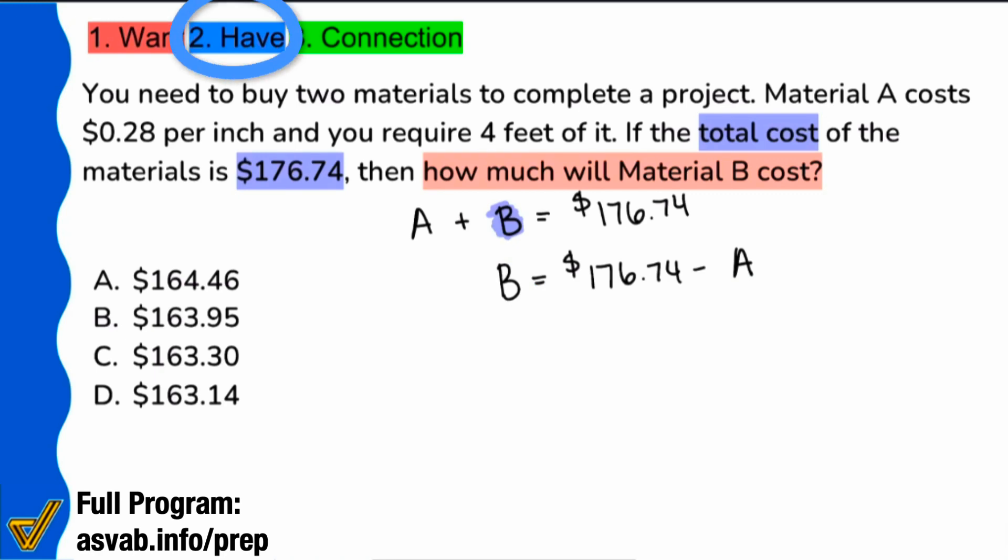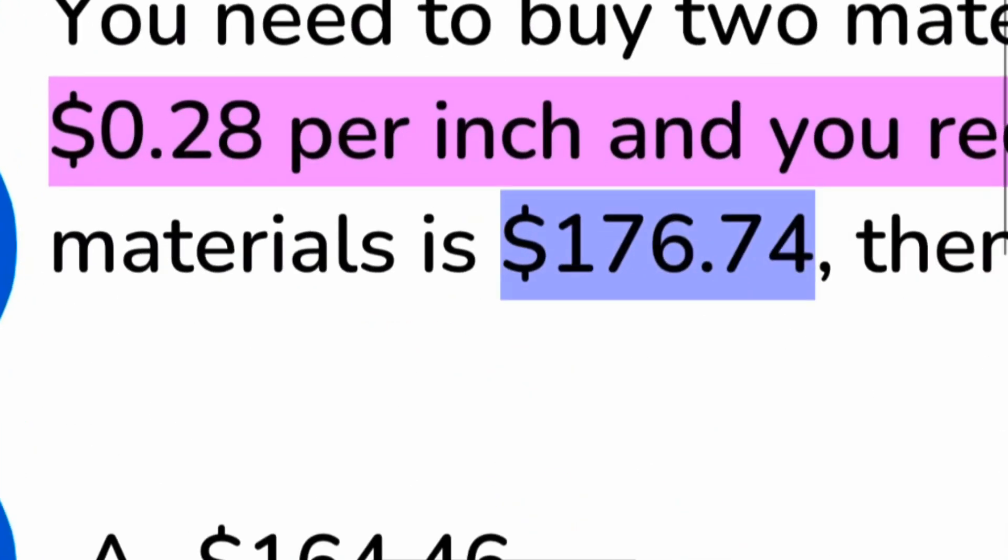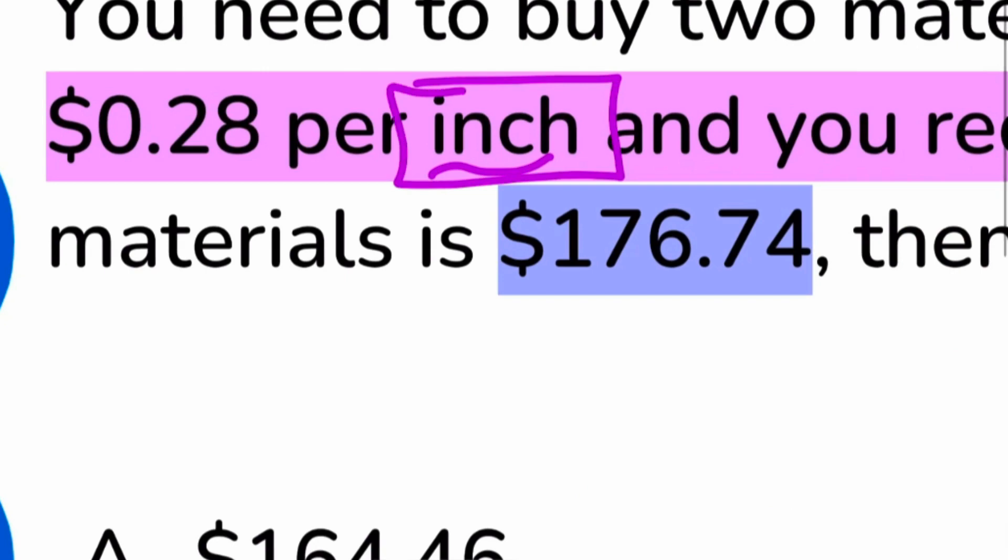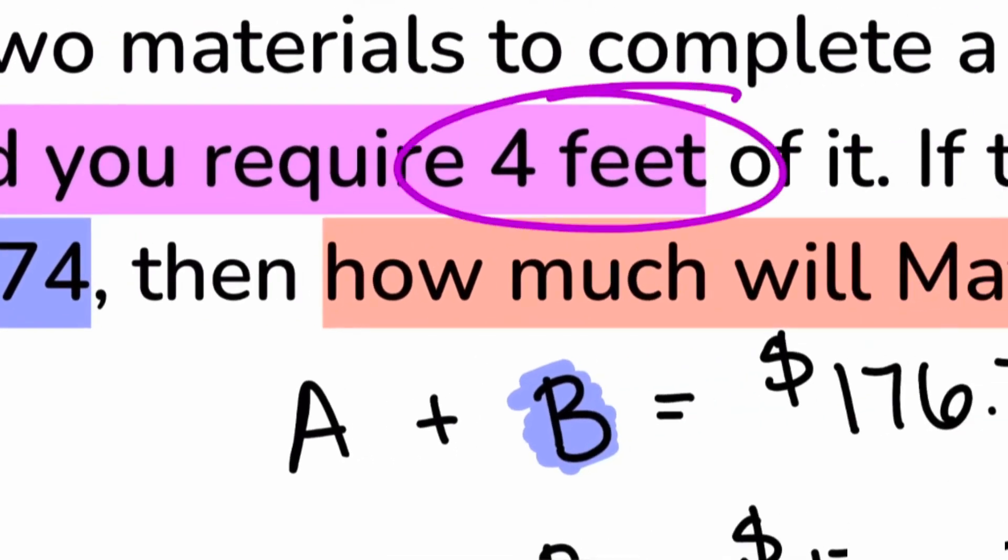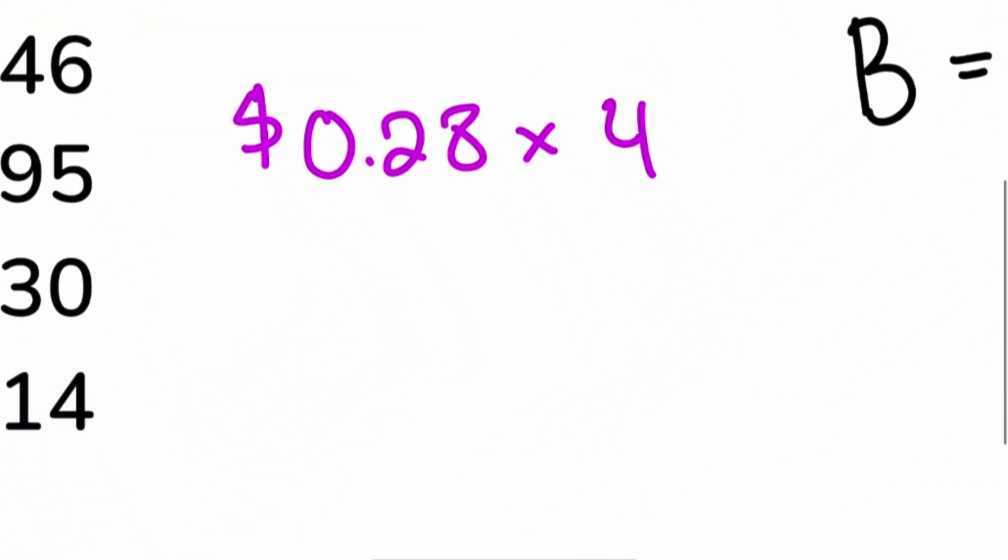Let's figure out what the cost of A is going to be. That's revealed to us right over here. Material A costs 28 cents per inch and we need 4 feet of it. When we try to work that math out, be very careful here because it's not going to be 28 cents multiplied by 4. Remember, what we read here is 28 cents per inch.